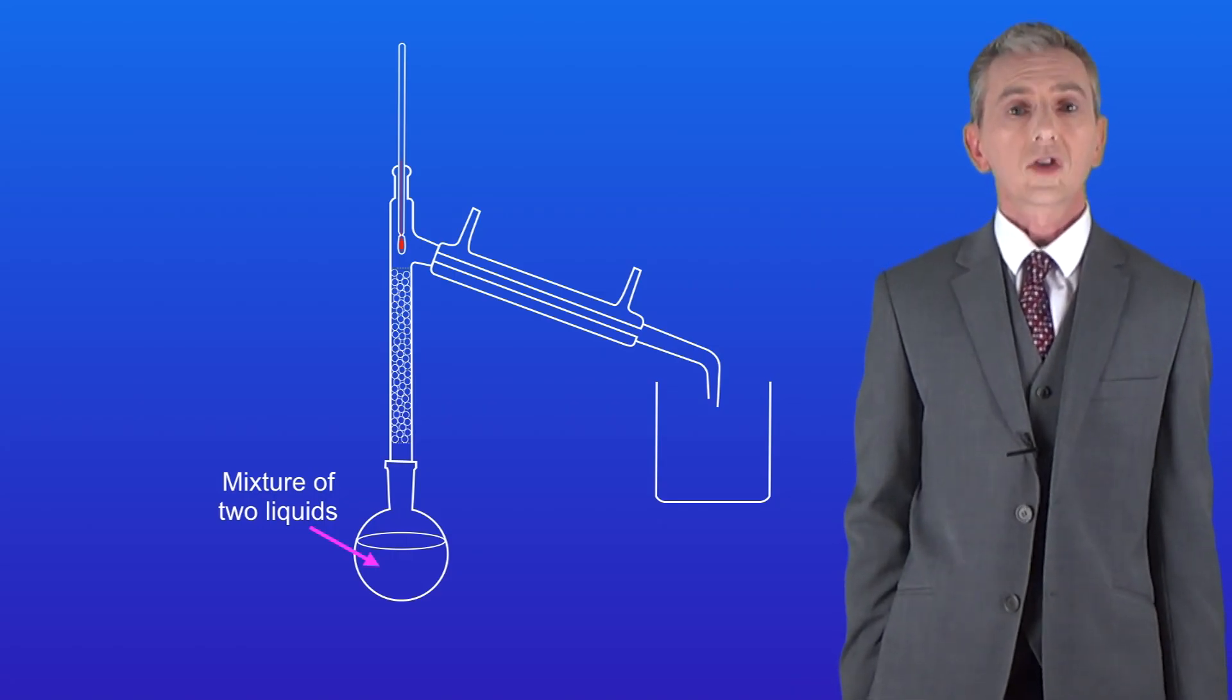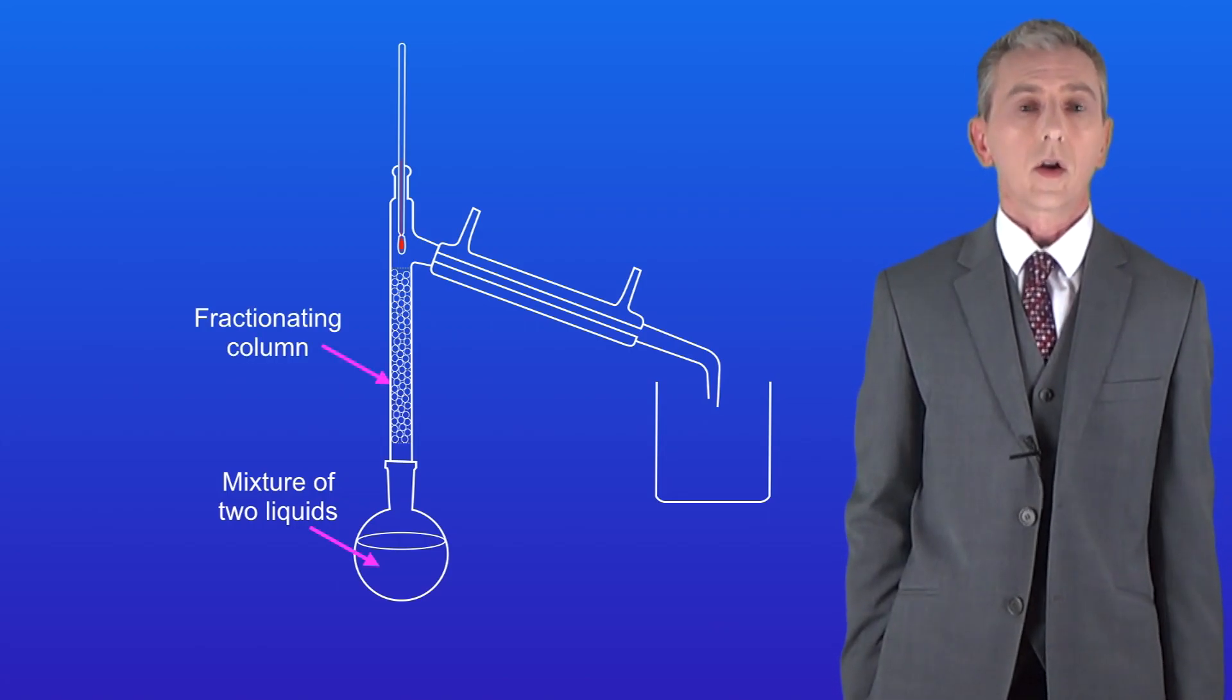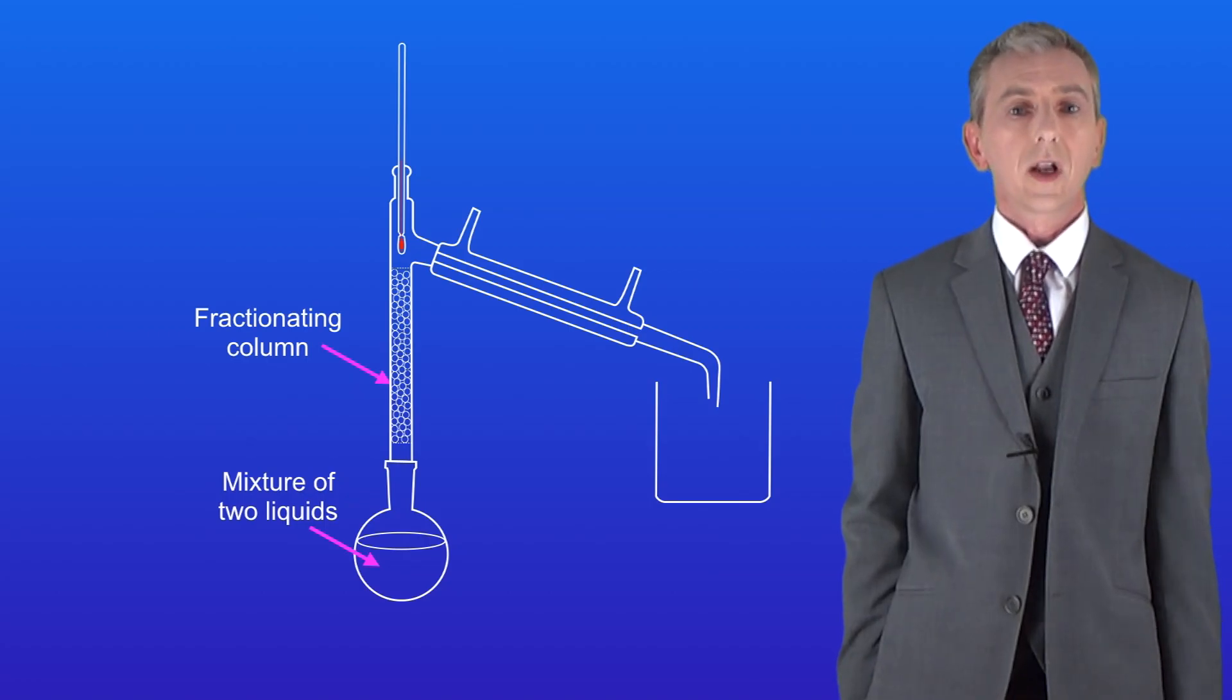The flask containing our mixture is attached to a long column containing hundreds of glass beads. This is called the fractionating column. As you'll notice, the fractionating column was not used for simple distillation. We're going to see what it does in a minute.